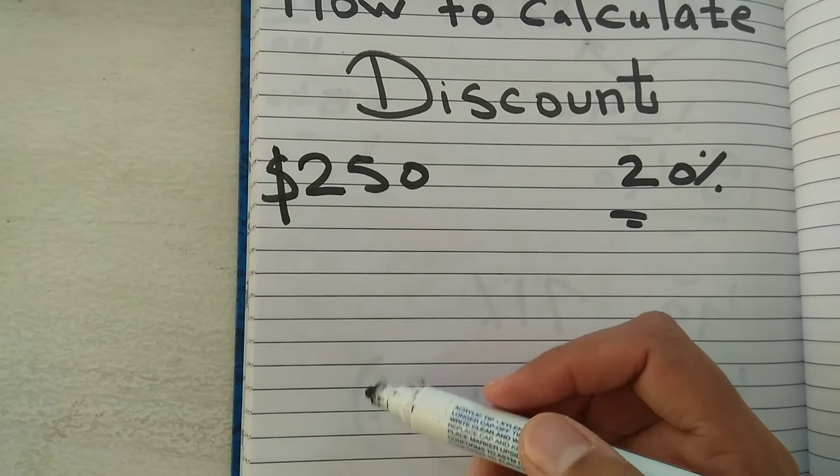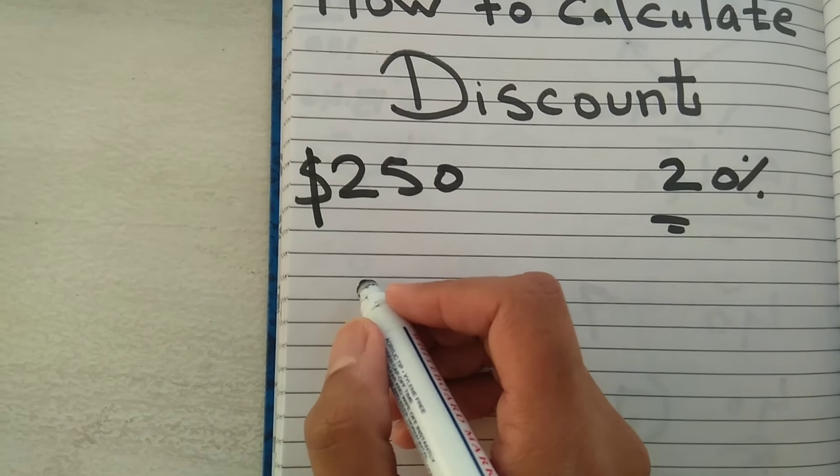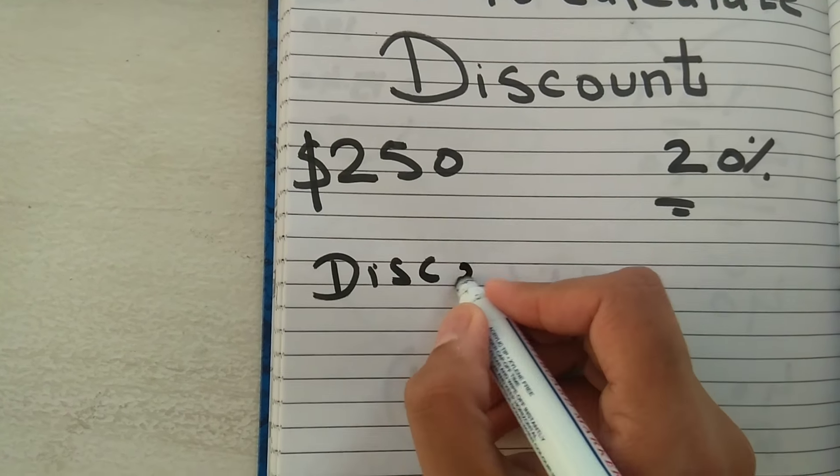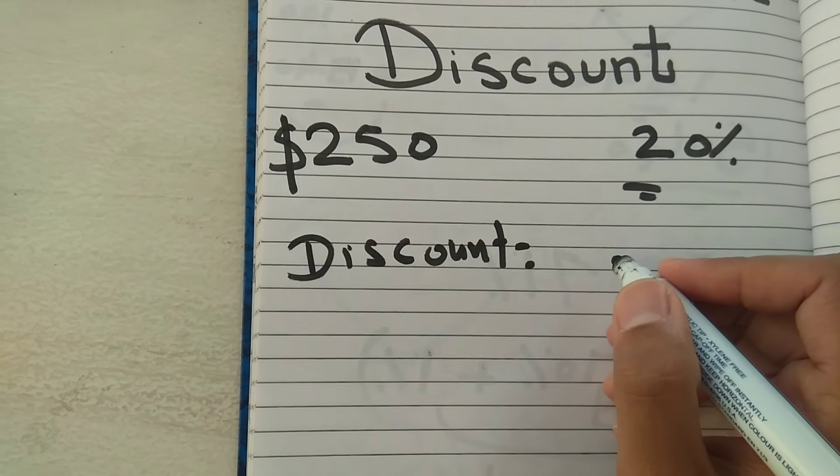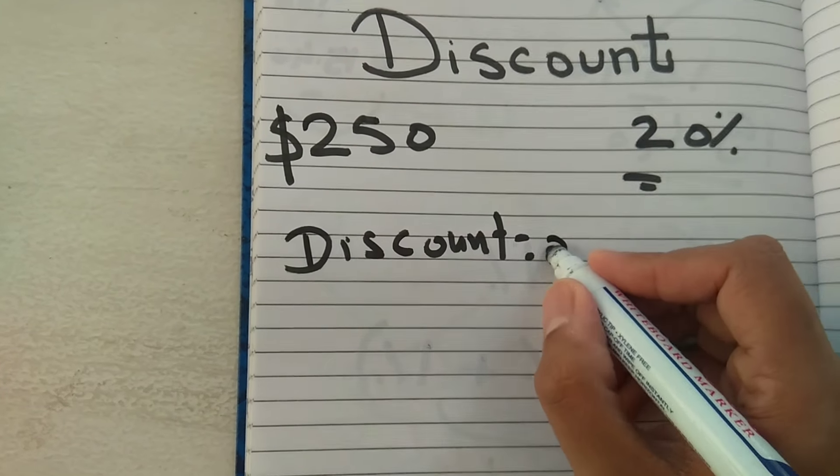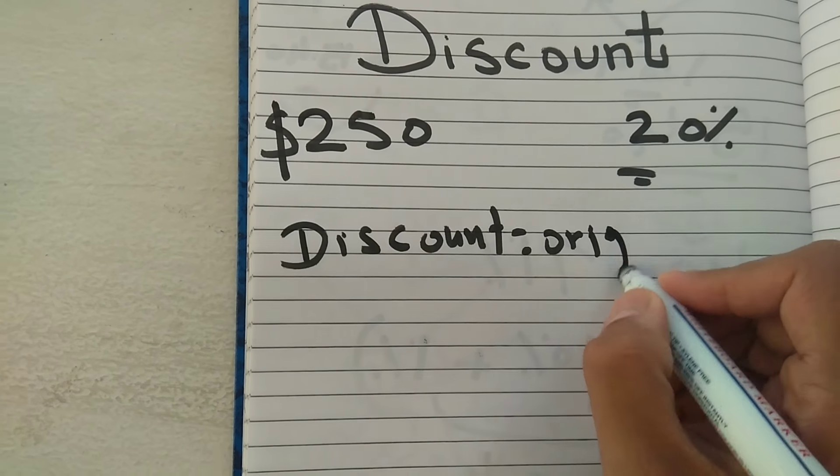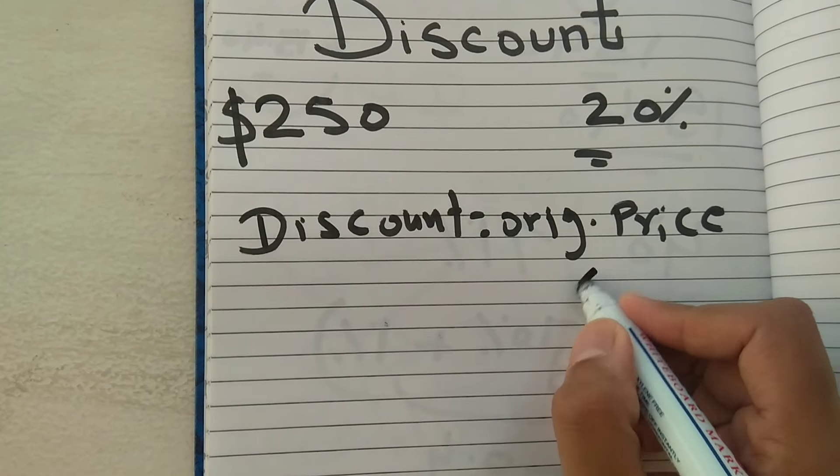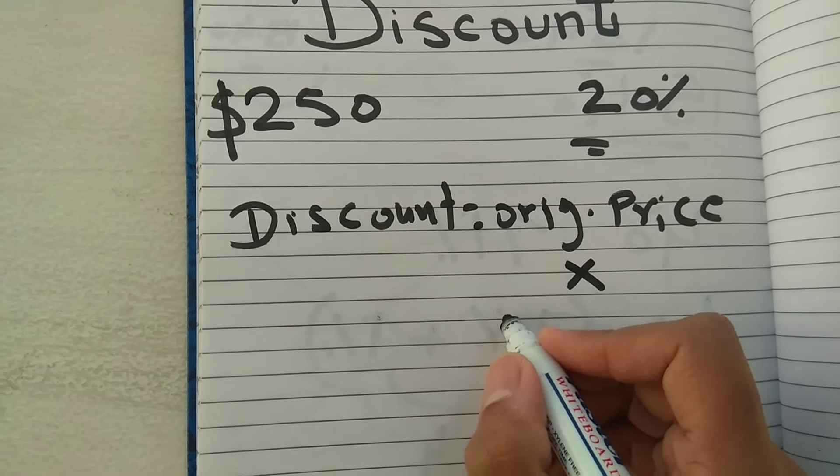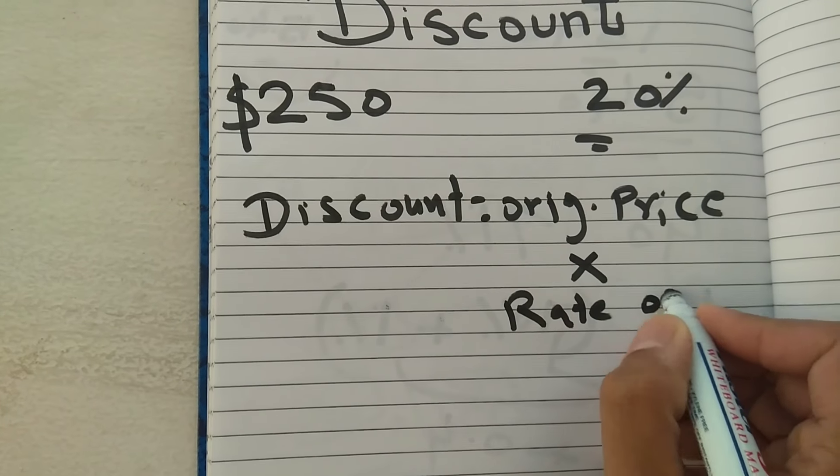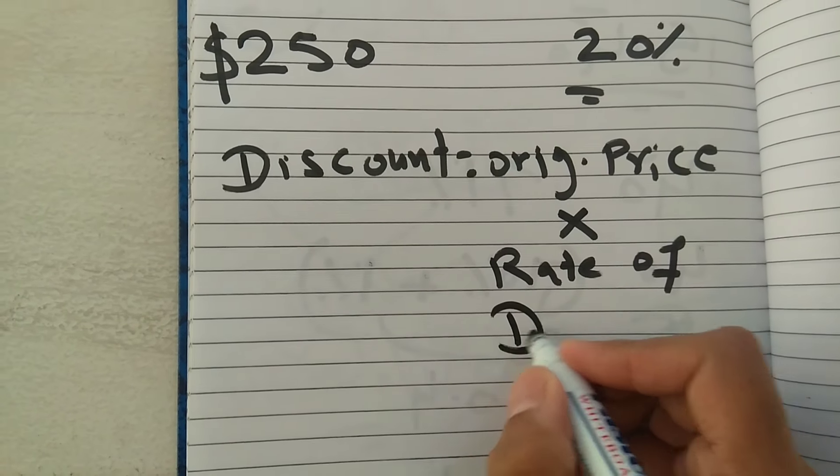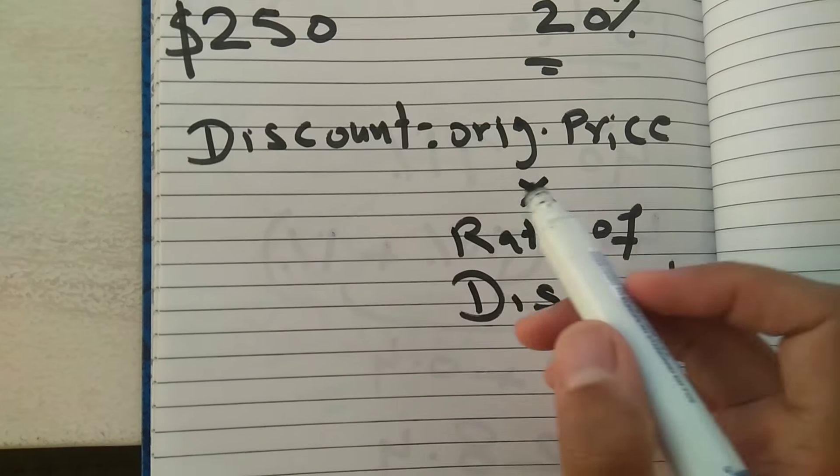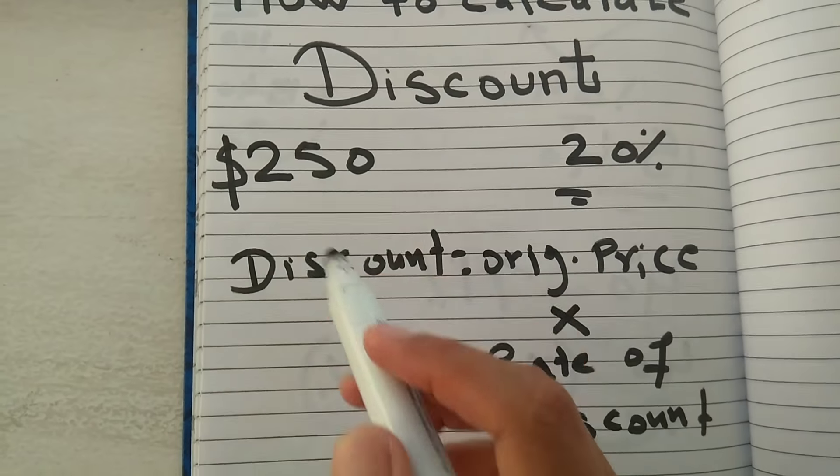There is a simple formula for discount. Discount equals original price multiplied by rate of discount. So, original price multiplied by rate of discount.